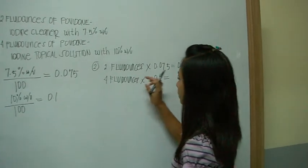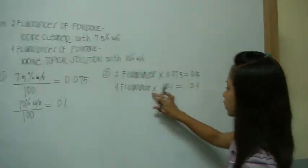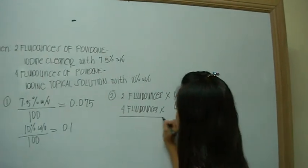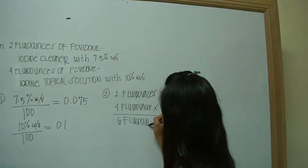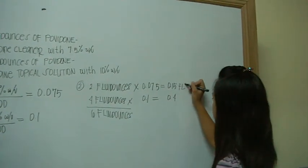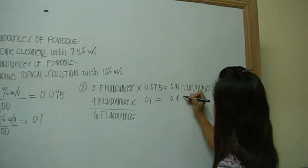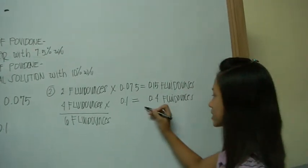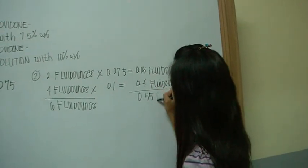The next step: we need to add the 2 corresponding quantities which are 2 fluid ounces and 4 fluid ounces. The sum is 6 fluid ounces. Then we need to also add the resulting products which are 0.15 fluid ounces and 0.4 fluid ounces. The sum is 0.55 fluid ounces.